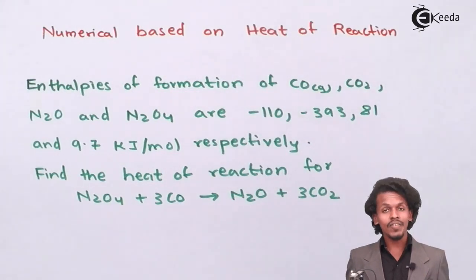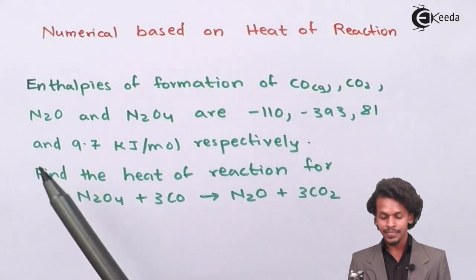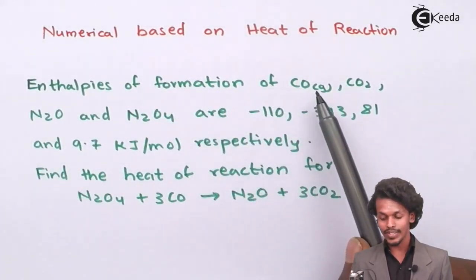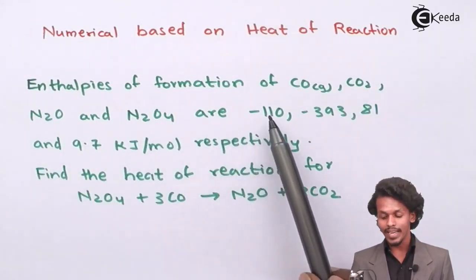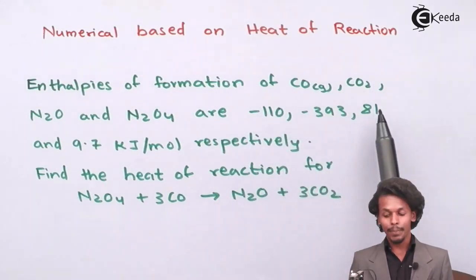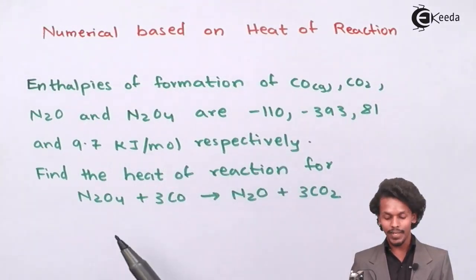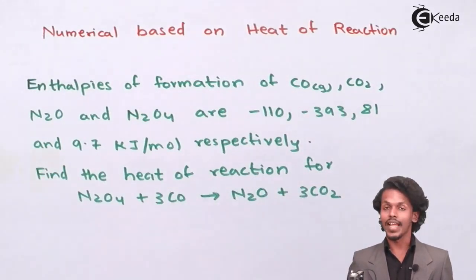So friends, there is a question based on the heat of reaction which is presented on your screen. That is the enthalpy of formation of CO (carbon monoxide), carbon dioxide gas, N2O gas, and N2O4 are given as minus 110, minus 393, plus 81, and plus 9.7 kJ per mole respectively. We have to calculate the heat of reaction for this reaction.